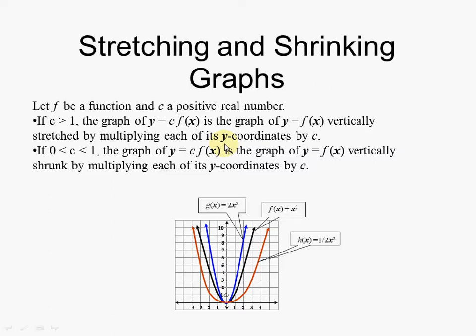So let's say we have a function, and let's say we have two situations. We have a function where there's a constant c up front — the function — and the constant is bigger than one, meaning it could be a 2, a 3, a 7, or a 1.00001. When that happens, we are stretching vertically. Meaning if we are having a parabola like this, then it will be stretched vertically — the blue one. If this was going upwards at a slow pace, all of a sudden it's going upwards at a fast pace.